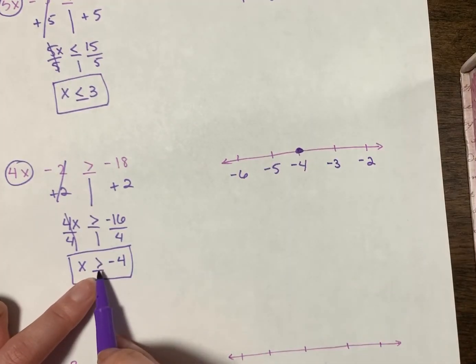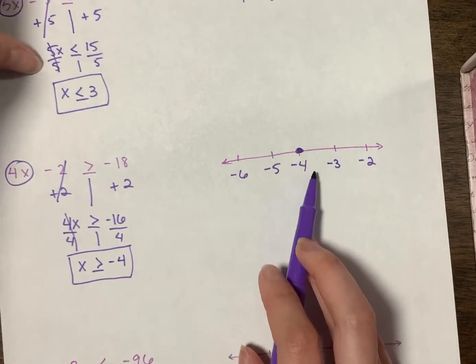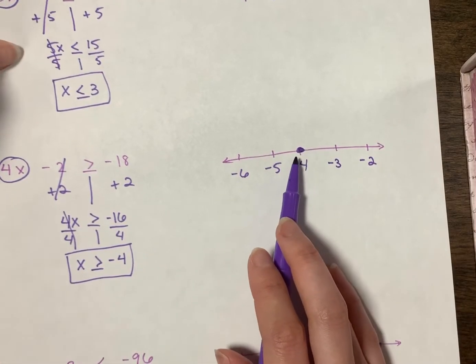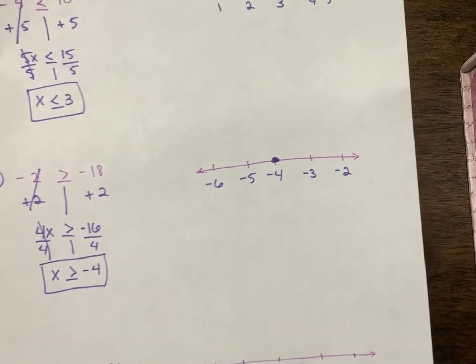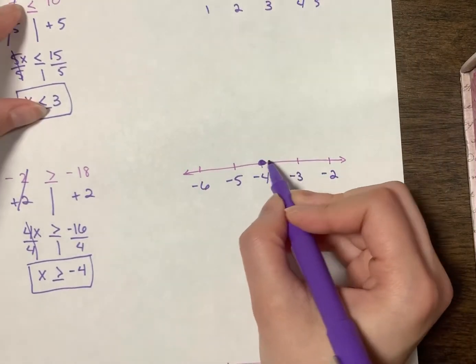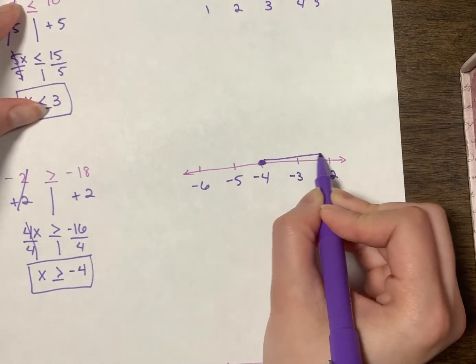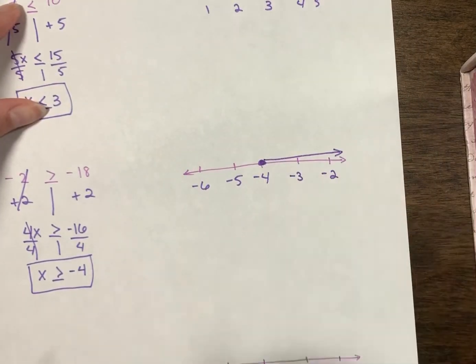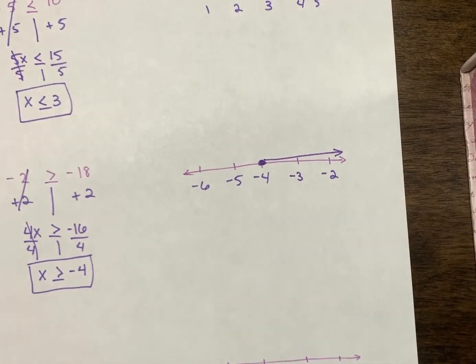When I graph, here's negative 4. To the right we have negative 3, negative 2, getting closer to zero. To the left is negative 5, negative 6, getting more negative. Because it's greater than or equal to, it's a closed circle at negative 4. x can be greater than that, so I draw the arrow to the right — more positive — because to the right is how we get greater.